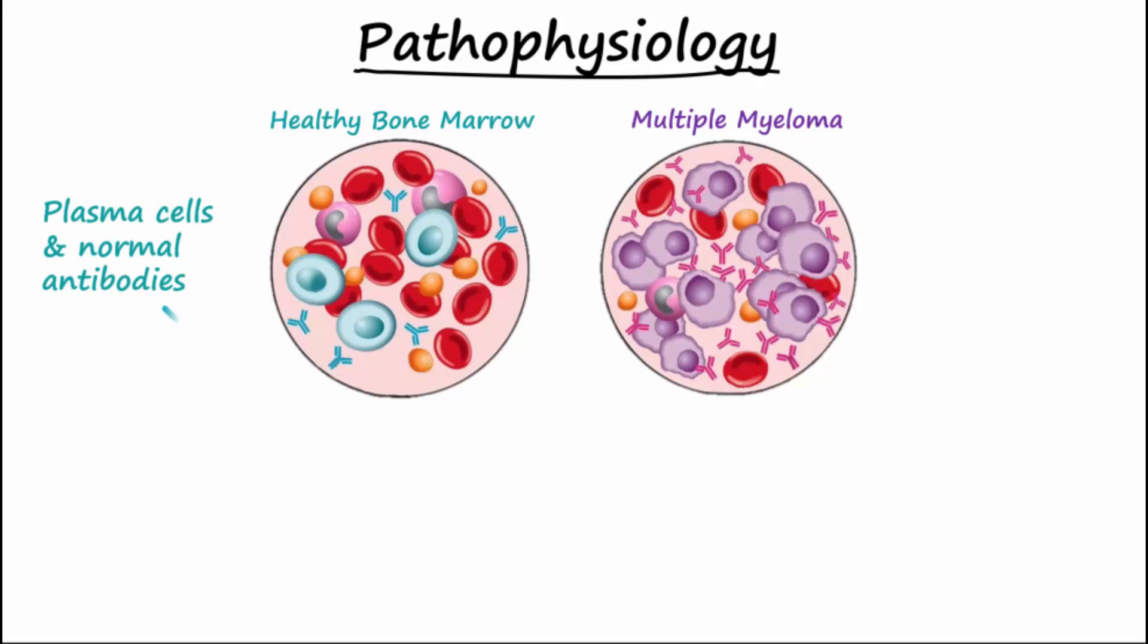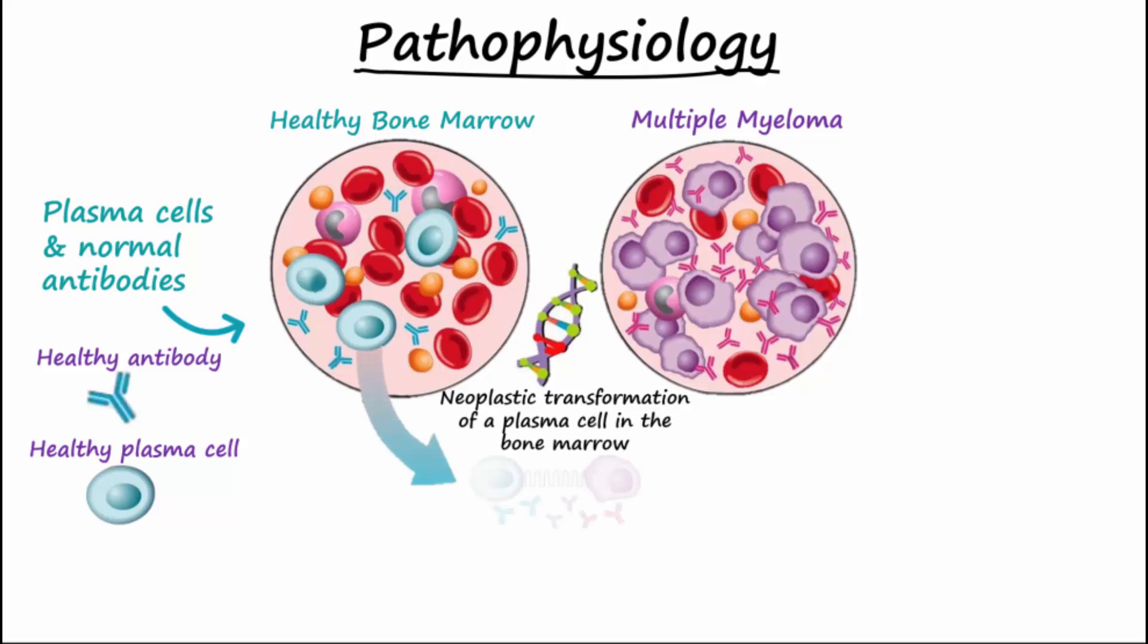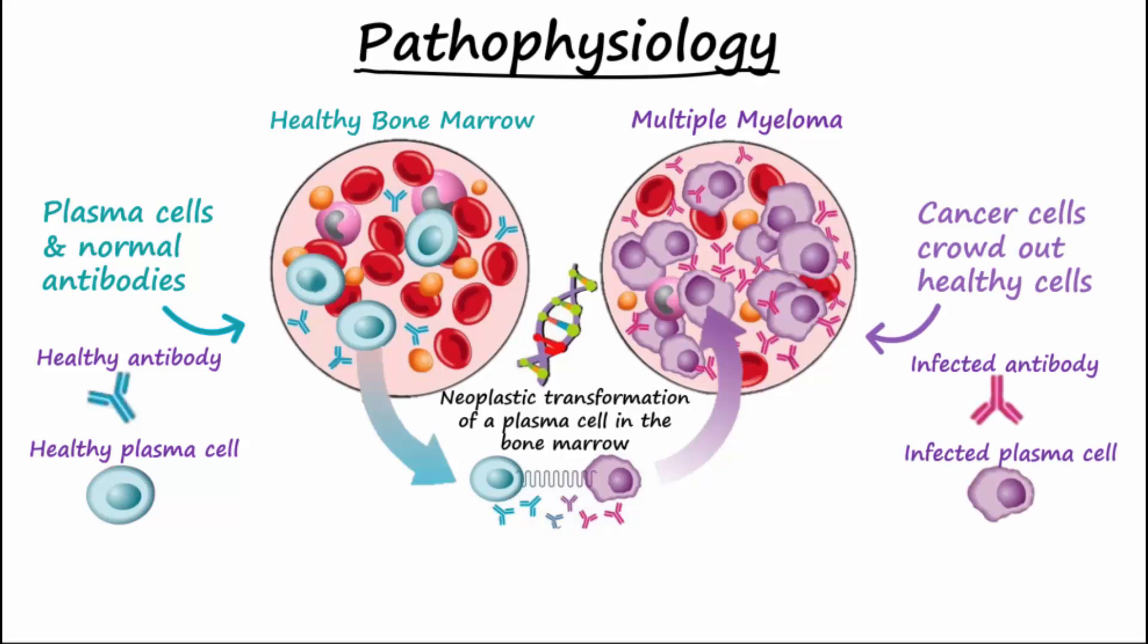Multiple myeloma occurs with a neoplastic transformation of a plasma cell in healthy bone marrow. Normal plasma cells and normal antibodies are crowded out by the now cancer cells that accumulate in bone marrow.